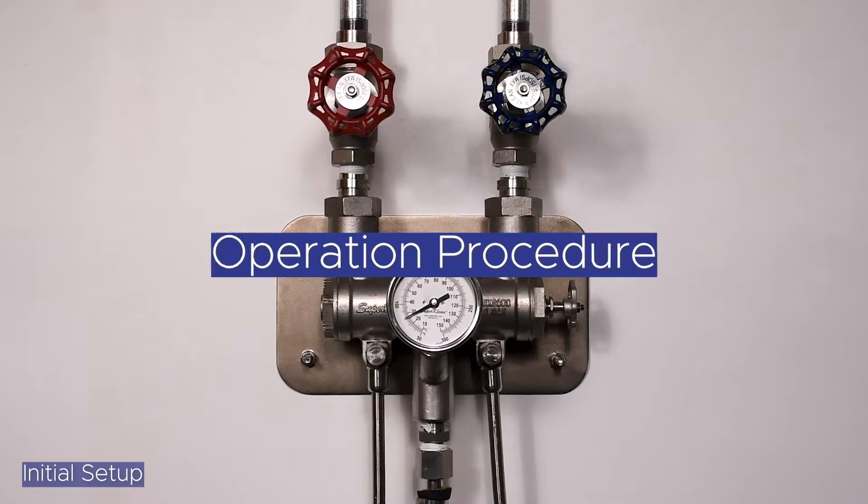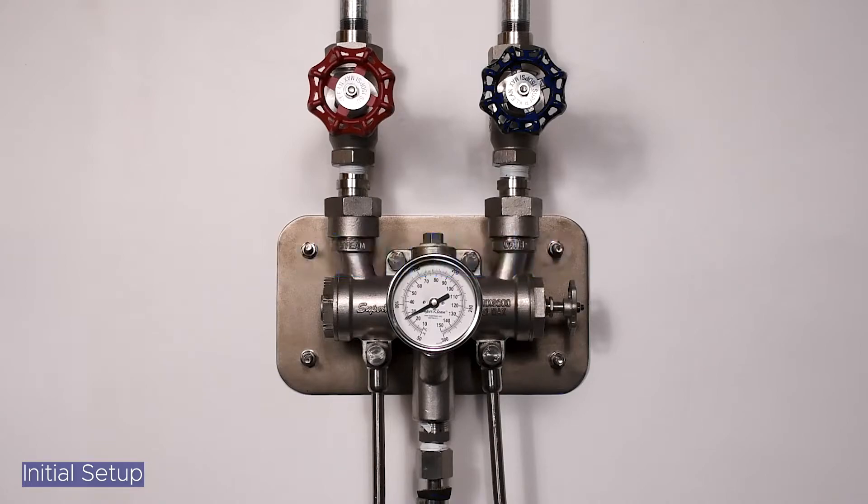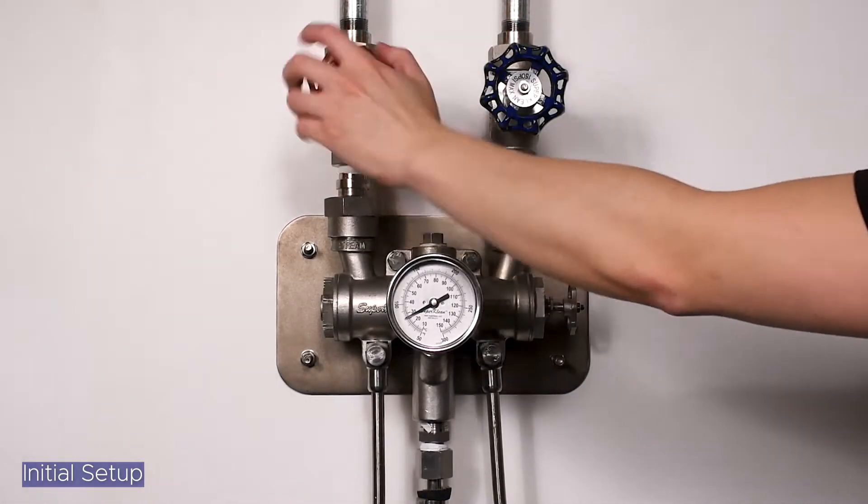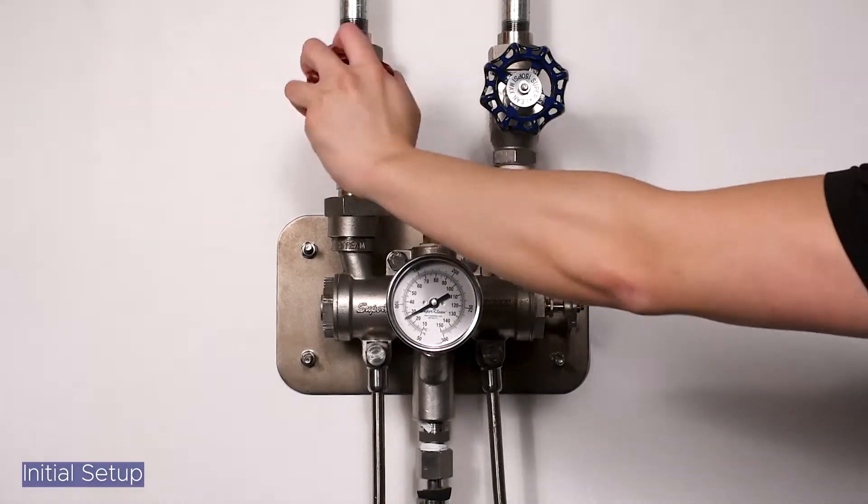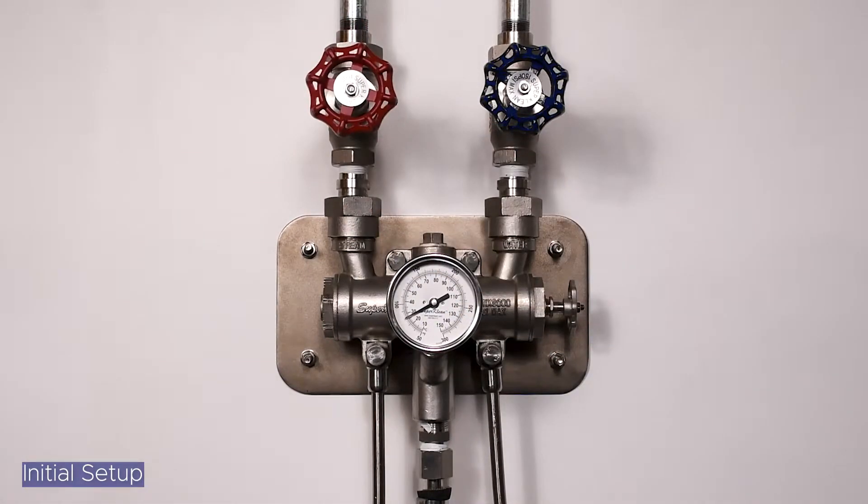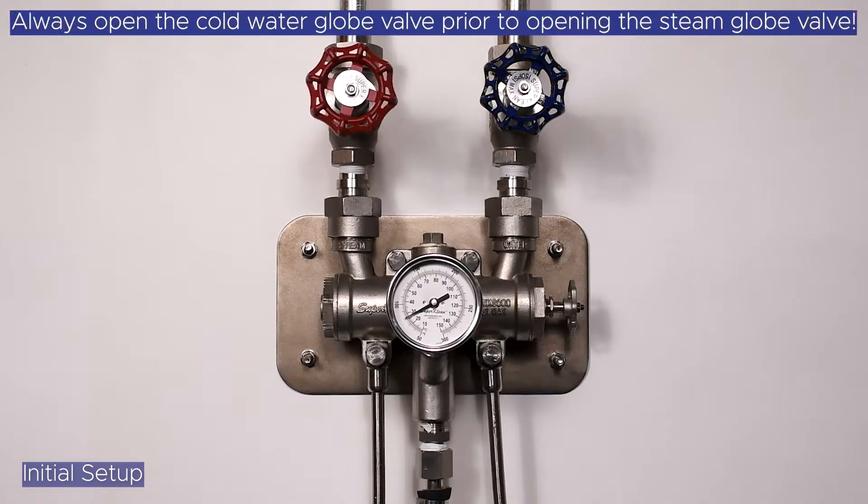To set your desired temperature for the first time and to begin operation, open the cold water globe valve to its full open position by turning the blue globe valve counterclockwise. Next, open the steam globe valve to its full open position by turning the red globe valve counterclockwise. Always open the cold water globe valve before opening the steam globe valve.